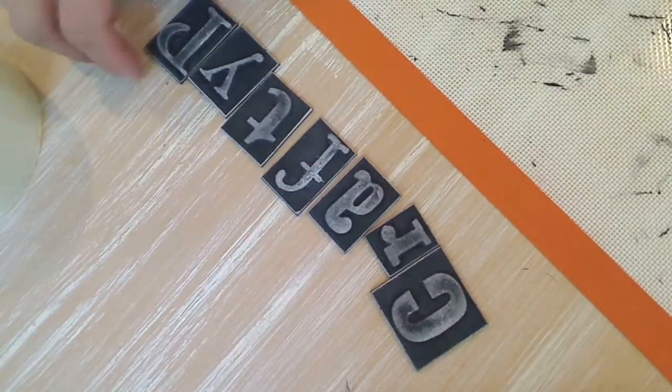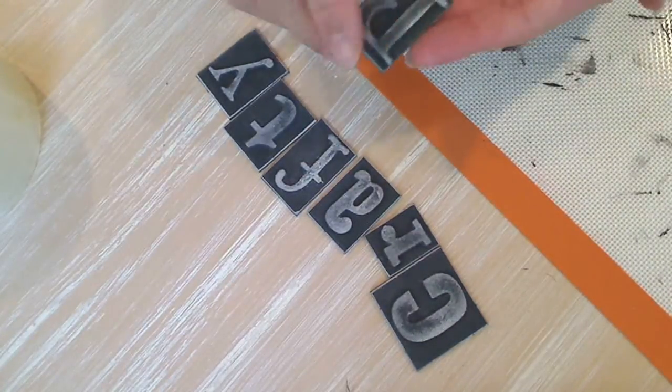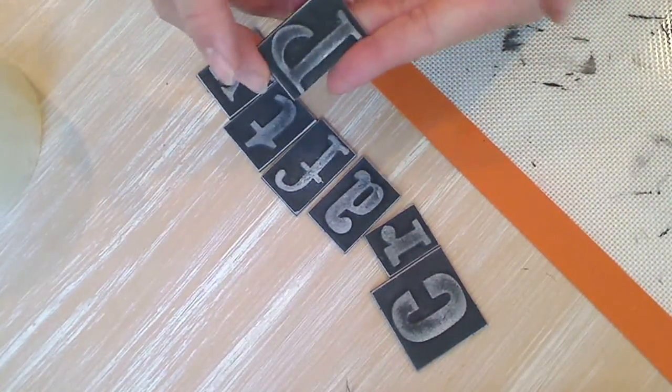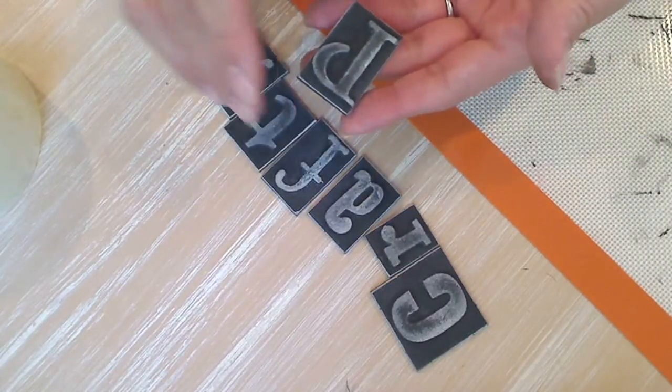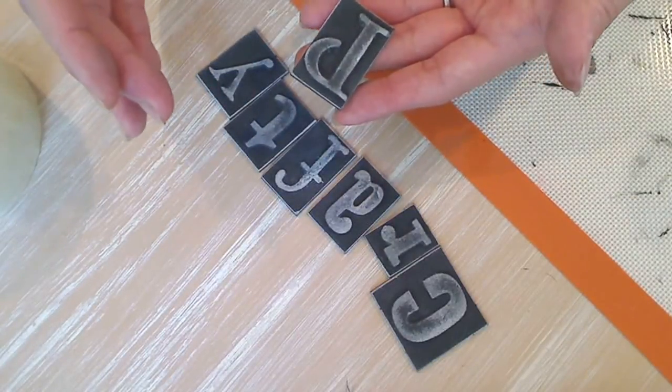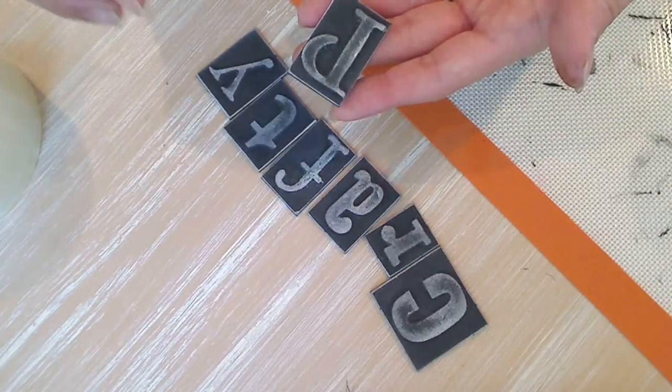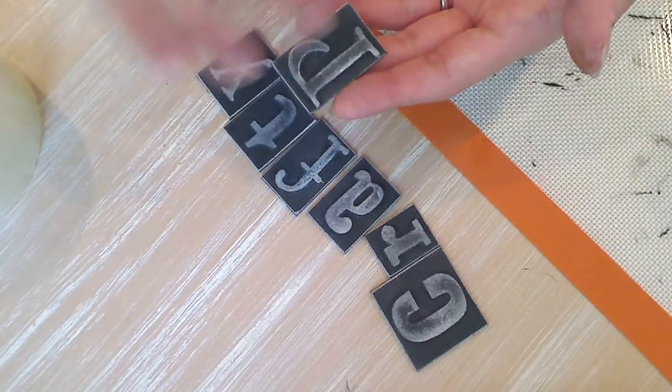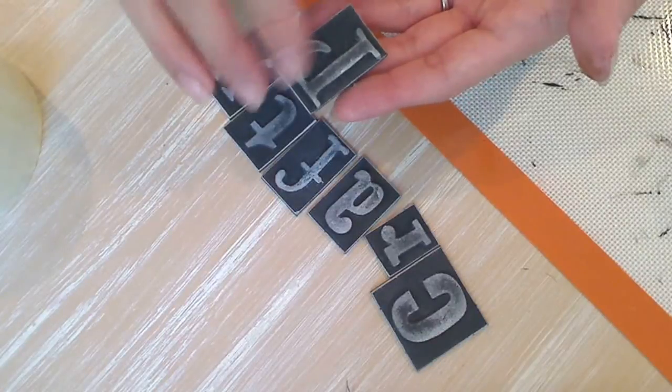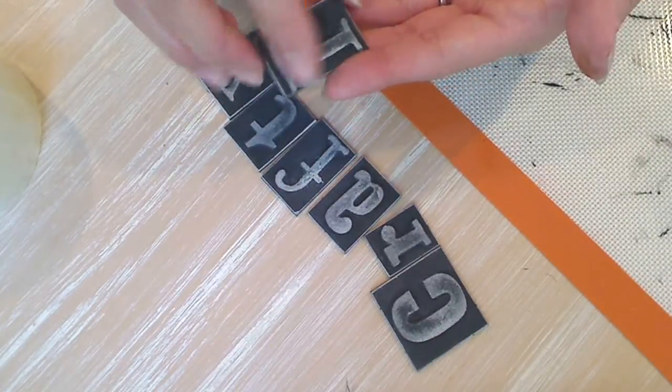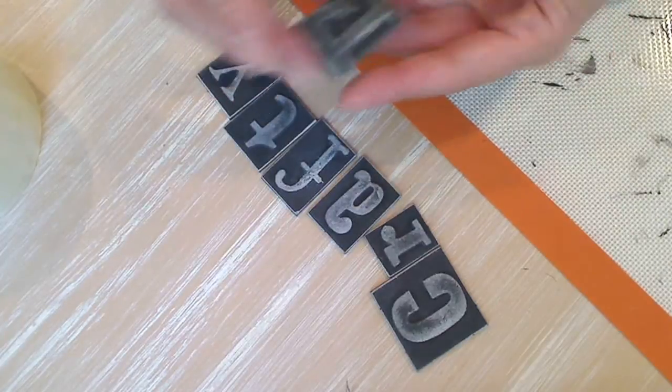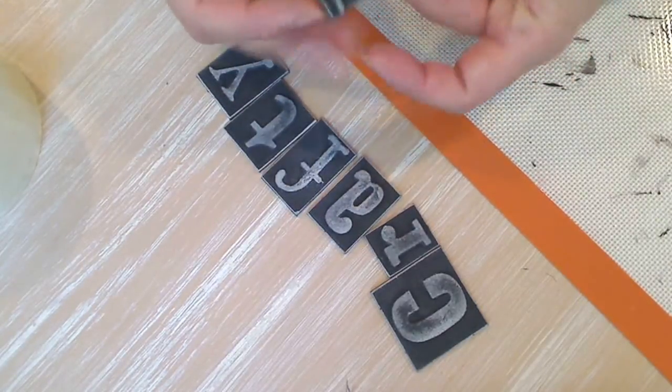So as you can tell, I have sanded down the letters. And like I said, I just used 220 grit sandpaper. The higher the number on sandpaper, the finer the grit is. So I didn't want to make this all pocked and rough. I wanted a really smooth finish, but I wanted to take off that paint off of the top of the letters and the edges. So I did that.